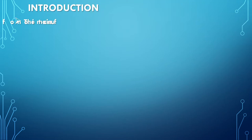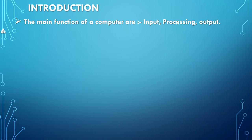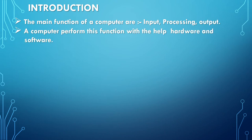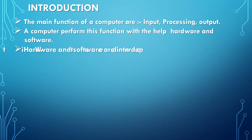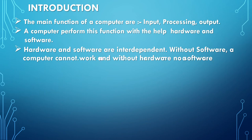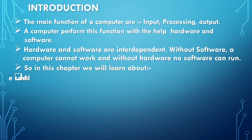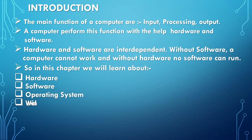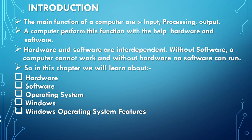Introduction: The main functions of a computer are input, processing, and output. A computer performs these functions with the help of hardware and software. Hardware and software are interdependent. Without software a computer cannot work, and without hardware no software can run. In this chapter we will learn about hardware, software, operating system, Windows, Windows operating system features, starting Windows and shutting down Windows.